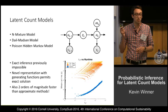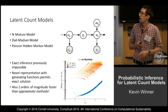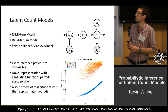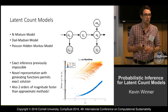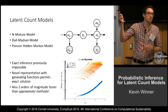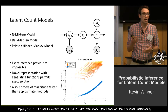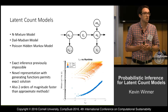This problem shows up in many models commonly used in ecology, such as the N-mixture model, Dail-Madsen models, and others from this family. They all share one fundamental challenge: we're trying to do inference over latent variables which have theoretically infinite support — the abundance at each time step could be unbounded.